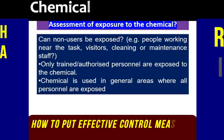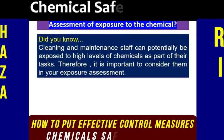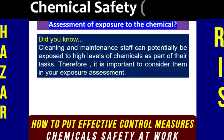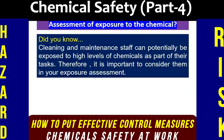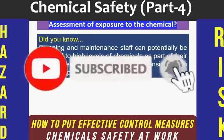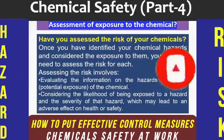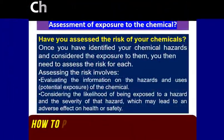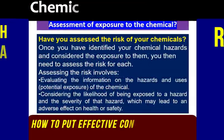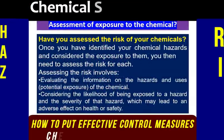These are very important questions. Without this questioning, you are unable to recognize the correct risk assessment procedure. You cannot decide how to manage the risk, and you cannot decide how to put suitable and effective control measures on site to manage the chemicals safely. Did you know cleaning and maintenance staff can potentially be exposed to high levels of chemicals as part of their tasks? Most of the time, we are not considering these people in our risk assessment or exposure assessment on site. Have you assessed the risk of your chemicals? Once you have identified your chemical hazards and considered the exposure to them, you then need to assess the risk of each.